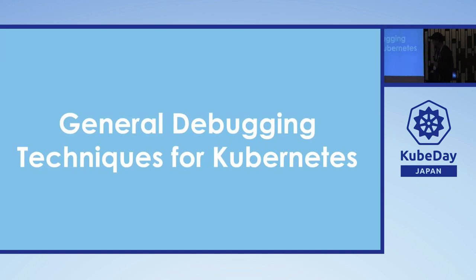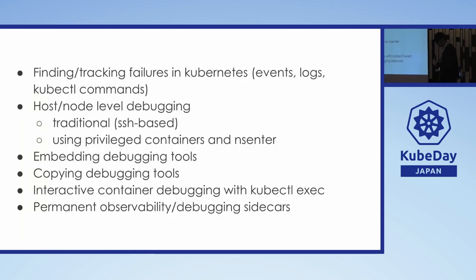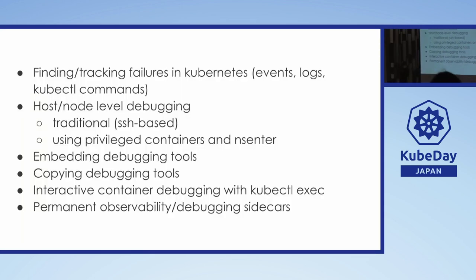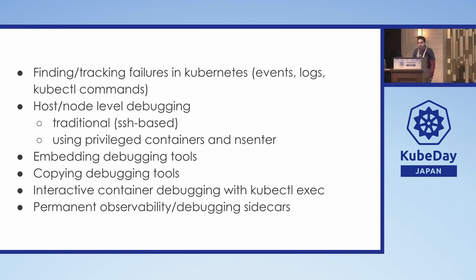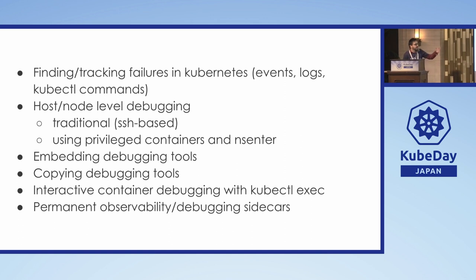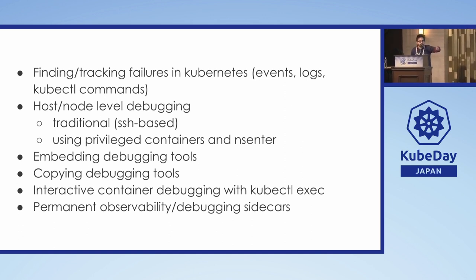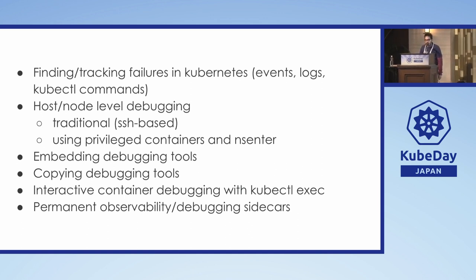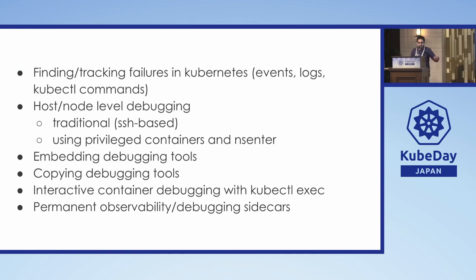Let's get started with general debugging techniques for Kubernetes that everybody's been doing. A quick preview: whenever there are failures, we go through the events, logs, describe, pod and node-level debugging. We SSH in, use privileged containers, embedded debugging tooling, and also kubectl exec — which is pretty common if you want to get inside the container — and then some sidecar stuff.